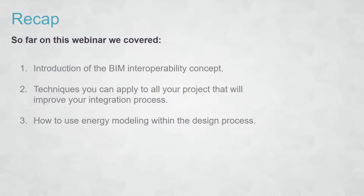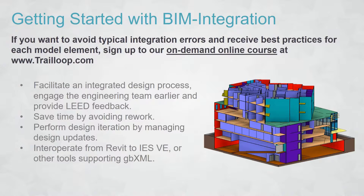To wrap up: we started with an introduction to BIM for interoperability, moved into five techniques to improve the integration process, and talked about how to use energy modeling within the design process. If you want to get started, we have an online on-demand course available at tralip.com. The course breaks down every single step — the majority teaching you how to use Revit for this specific integration process to mitigate all errors before getting into the IES virtual environment. It can be shared with architects and engineers, takes a few days to complete, and then you're able to create your own projects.